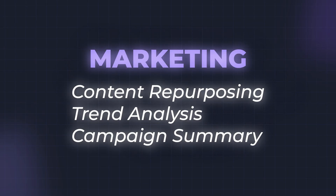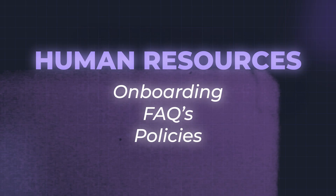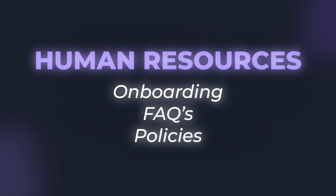AI agents are changing the game because they can take over all the boring parts of your job while you focus on the most interesting pieces. Here are some examples of how companies use it. In marketing, it's being used for content repurposing, trend analysis, or campaign summaries — pulling a lot of data and clarifying it. In sales, it's used for lead qualification, follow-up, and CRM cleanup. For HR, it could be for onboarding or policy FAQs. There are many more cases, and every company uses it differently based on their needs, but possibilities are endless.